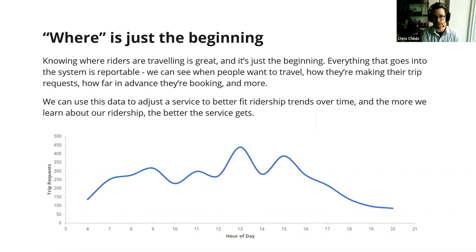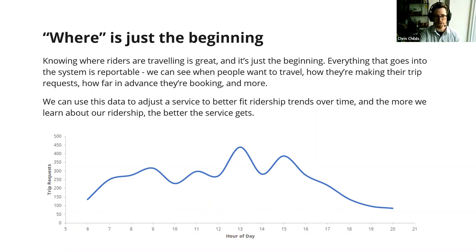The where information is still useful. For example, if we know a lot of people board at a shopping mall, we can direct drivers with downtime to head over there in case someone wants to book a walk-on trip. It makes things smoother — people don't have to wait as long for a vehicle. And if we know a location is a popular spot for walk-on trips, having a bus handy right there means riders don't need to book ahead; they can just walk out and jump on board.